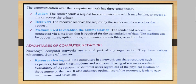The receiver receives the request from the sender and then services that request. The medium is used to establish the communication — the sender and the receiver are connected via a medium, which is required for the transmission of data. The medium can be a copper wire, optical fiber, satellite, or radio links. The internet is an example of radio links.